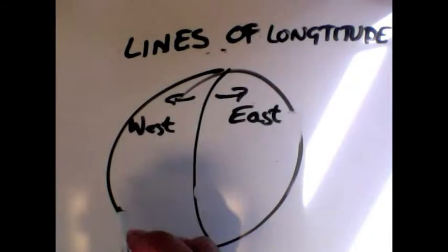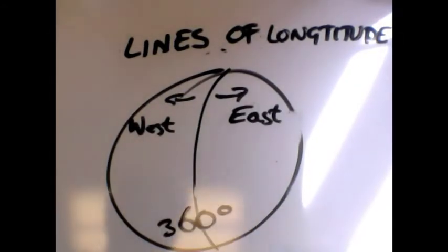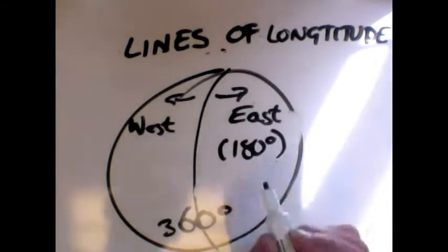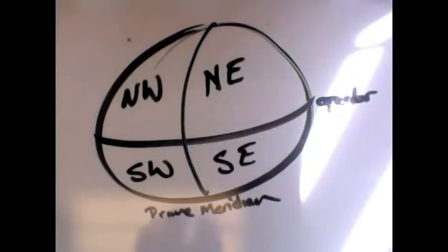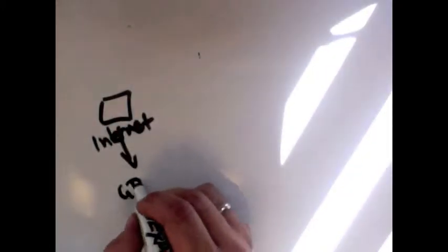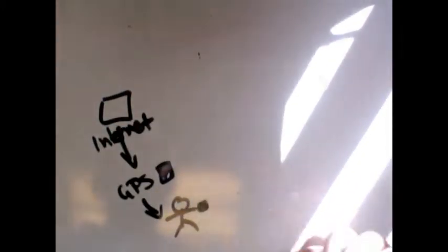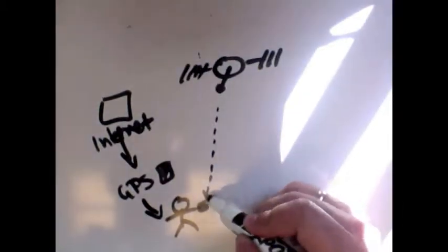It runs through Greenwich, England. There's 360 meridians—180 on the west, 180 on the east side of the globe. If you take the prime meridian and equator, you can divide the globe into four quadrants. When you go on the internet to download your coordinates, you put them in your GPS.